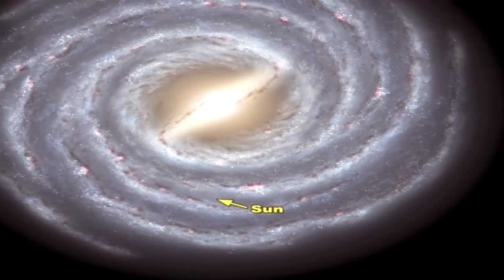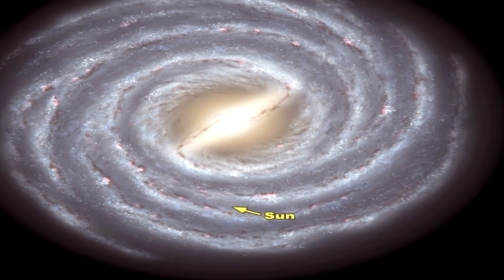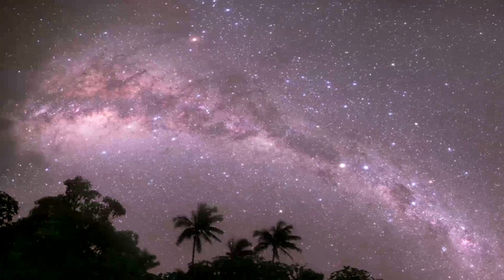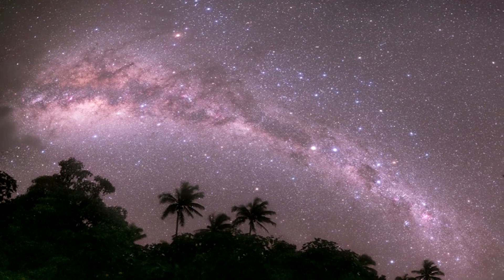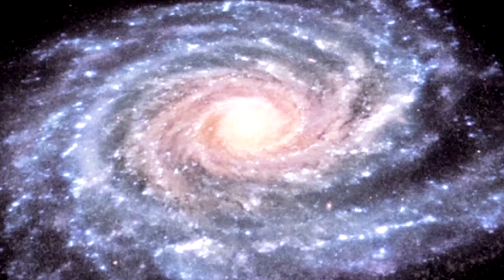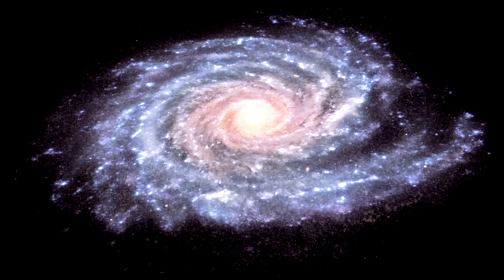The Milky Way is the galaxy that includes our solar system, with the name describing the galaxy's appearance from Earth, a hazy band of light seen in the night sky, formed from stars that cannot be individually distinguished by the naked eye. Fast Facts About The Milky Way, What You Didn't Know.